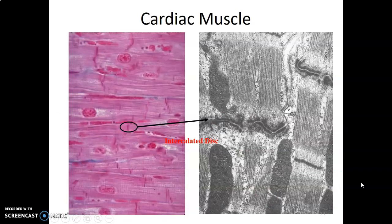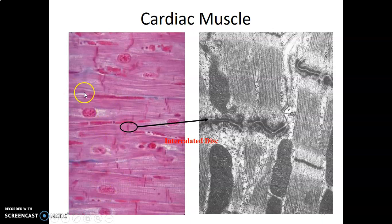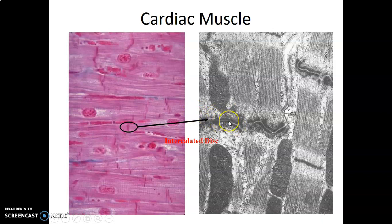The myocardium is striated and branched, with one or two nuclei located at the center of the cell, and shows intercalated discs. You can appreciate striations and these darker vertical lines are the intercalated discs. Under electron microscopy, the intercalated discs are made up mainly of gap junctions and desmosomes.